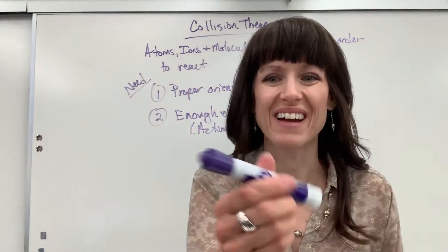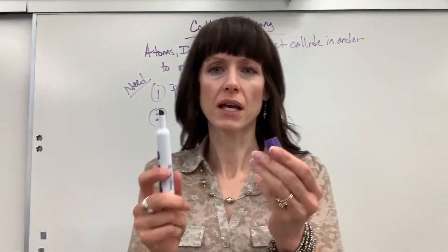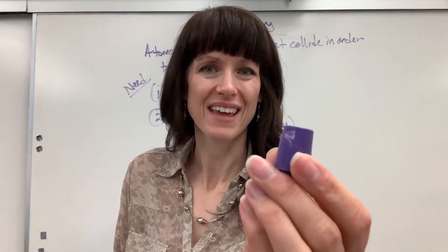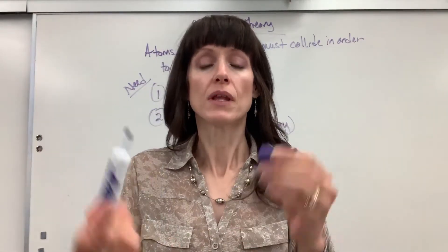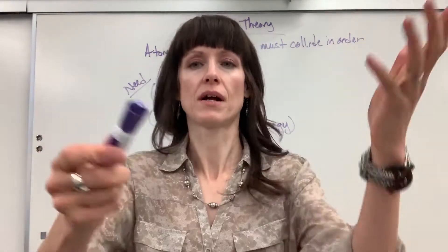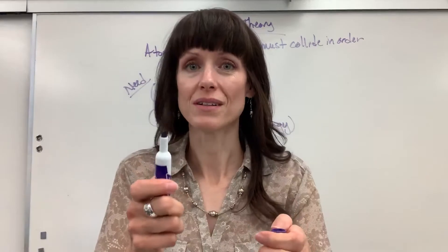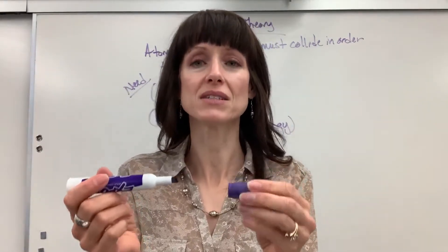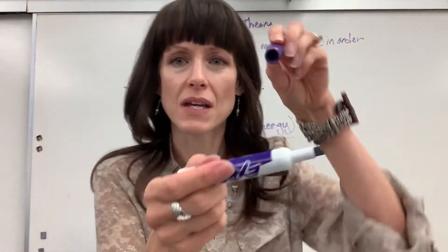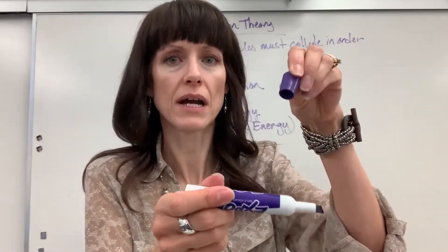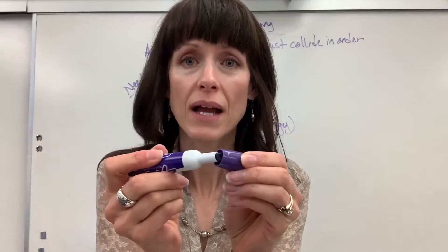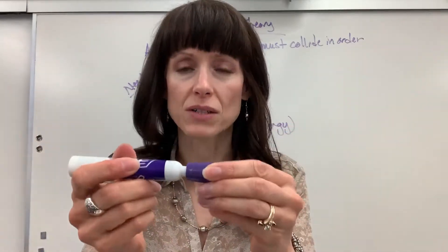I'm going to use my little marker as an example. Let's say that the reaction is going to be between the tip of the marker — there you can see it — and the cap right there. You and I know this is how the marker and the cap attach, right there. So I push that on. Using collision theory, you have to have these two reactants hit at the right spot — that's proper orientation. So if these are flying in space and the cap hits here, no reaction. The cap hits here, no reaction. The cap hits here, no reaction. It has to hit perfect right there.